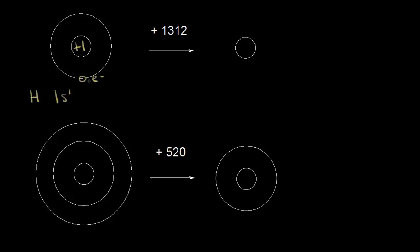This negatively charged electron feels an attraction for the positively charged nucleus, so to pull it away you must add energy. If you add 1,312 kilojoules per mole, you can pull that electron away. You'd be left with just a positive one charge in the nucleus and no electrons — you no longer have a neutral atom. You have H plus, because you have a positive charge of one and zero electrons.